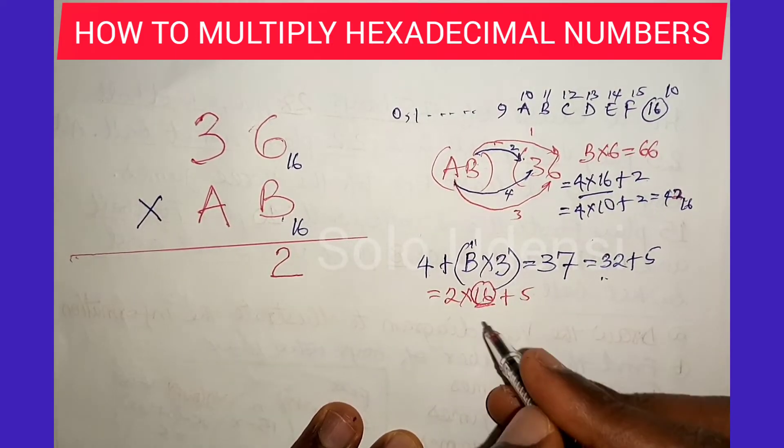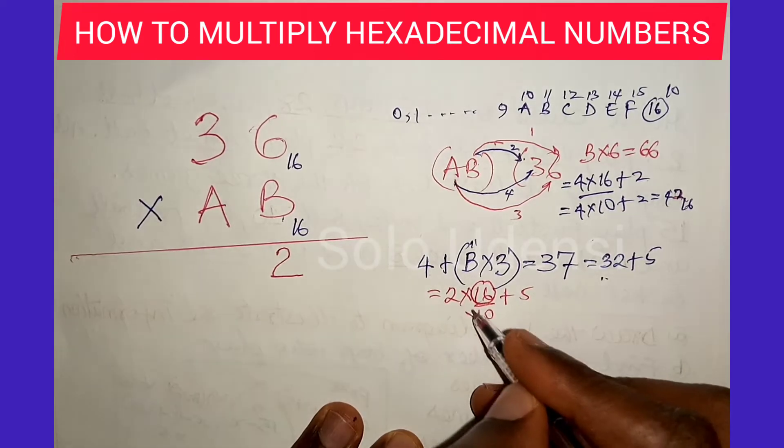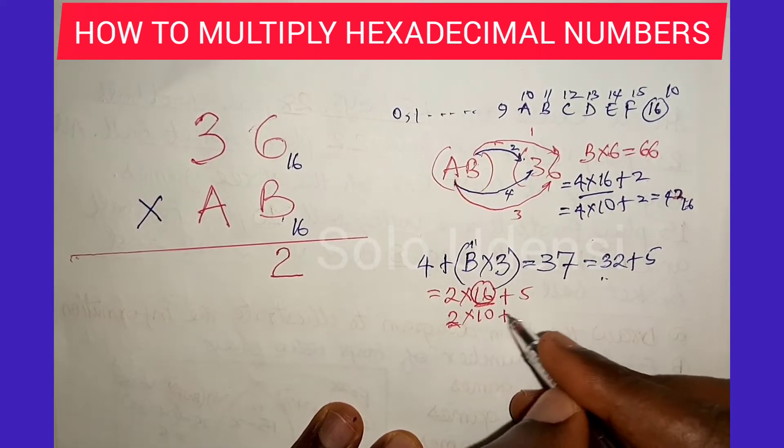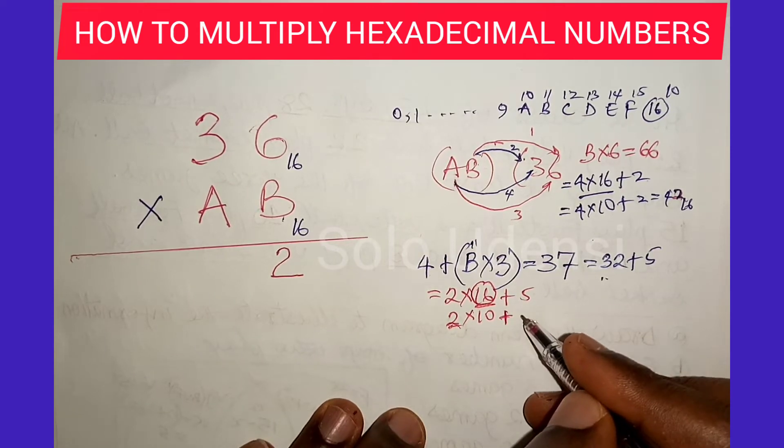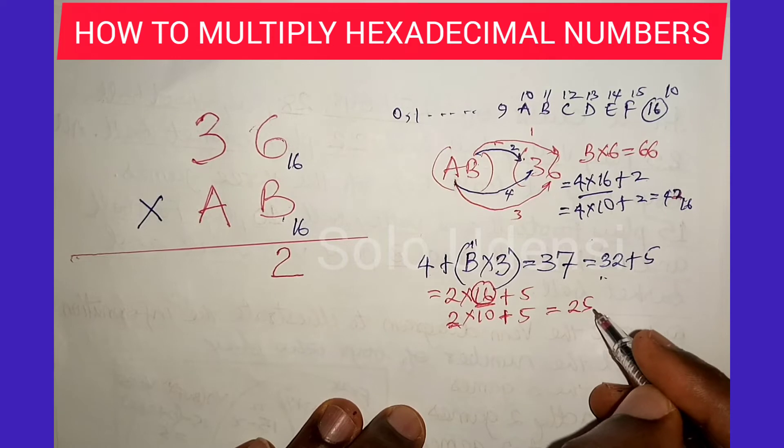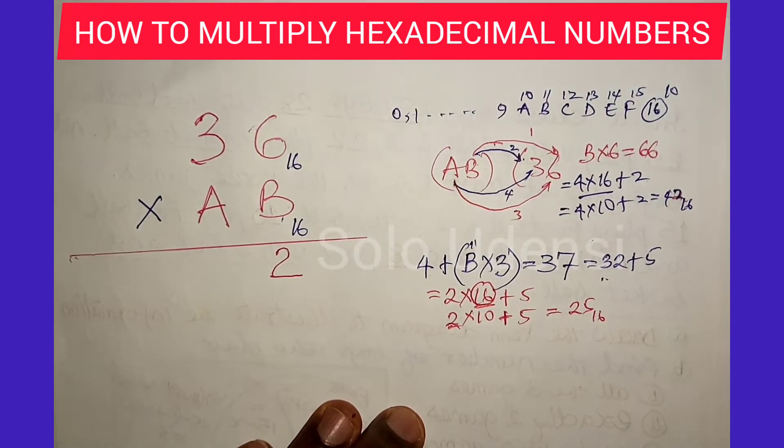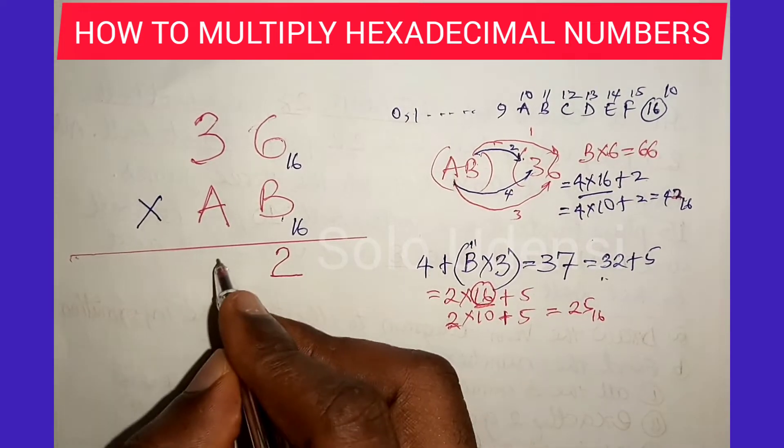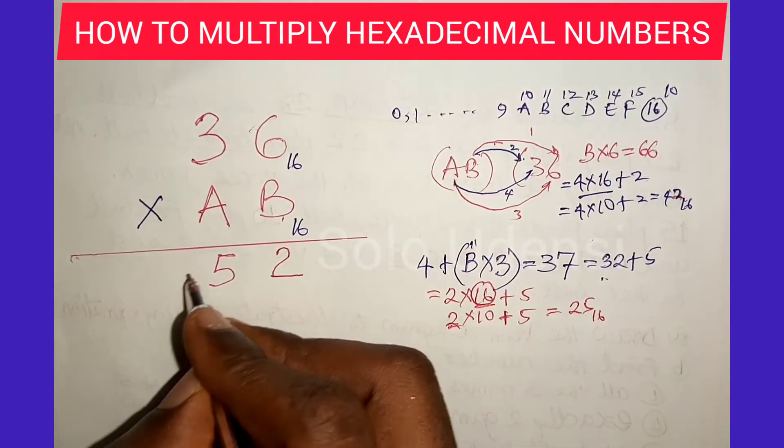Remember, the 16th one is equal to 10. In base 8, the 8th one is equal to 10. In base 4, the 4th one is equal to 10. So note those. So you have it to be 25 base 16. We write 5 and carry 2.